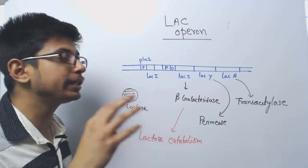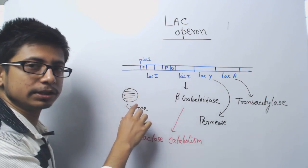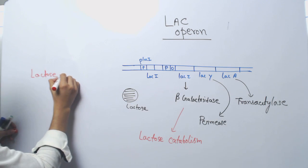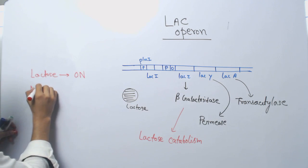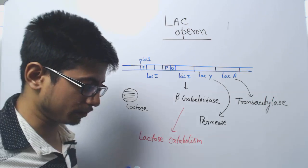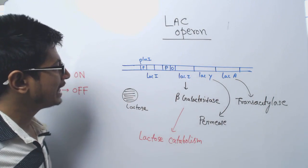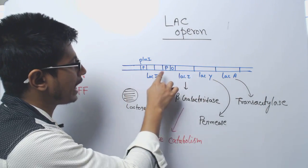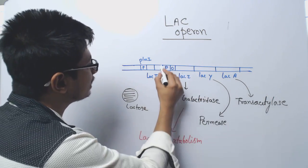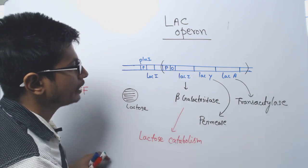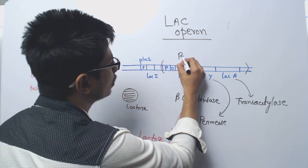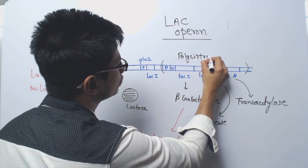Let us see how this is actually regulated. Lactose present: turned on. No lactose: turned off. But what is the mechanism? In this complete operon system, we have these structural genes with a promoter and operator. Three different structural genes are controlled under one promoter — that is why it is known as polycistronic expression of the gene. There is another promoter and gene present upstream of the structural elements, known as the lac I gene and lac I promoter.